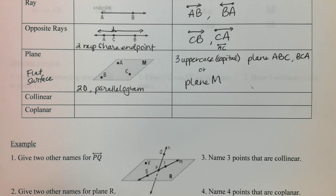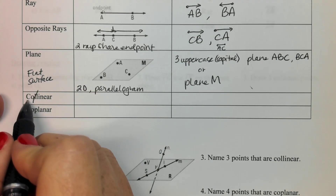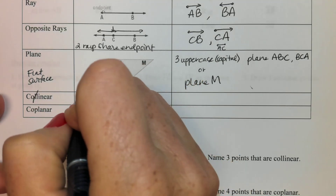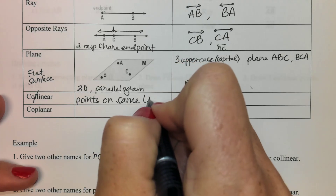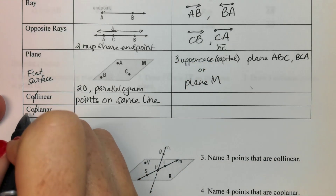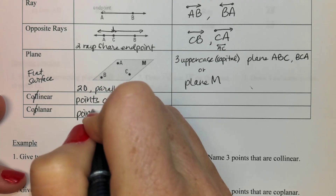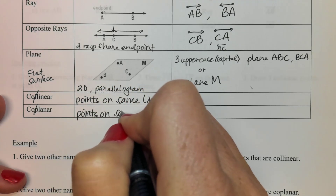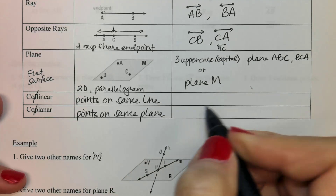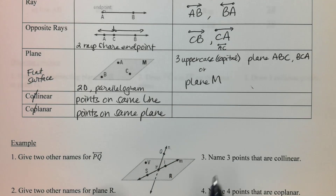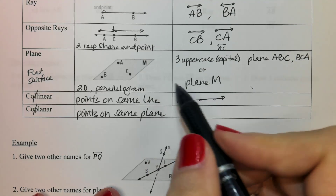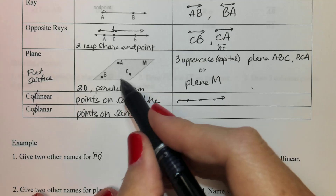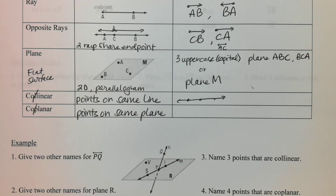Two more words. Collinear — it's kind of right in the title. 'Co' means together, all on the line. So it's just points on the same line. And coplanar would be the same idea: points on the same plane. There's not really notation for that. Collinear would literally just be points on the same line, and coplanar would be like this picture — A, B, and C are on the same plane, so they're coplanar. It's more of a vocab word.